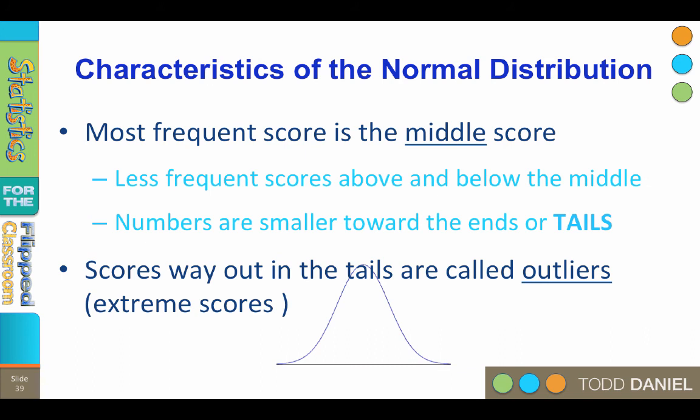If you know someone, for instance, who is seven feet tall, then you know someone whose height is an outlier. In our example of the football field, our outlier person was six feet six inches tall. When we are doing data analysis, we will need to decide what to do with those outlier scores, and we'll learn more about that in another chapter.